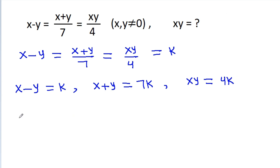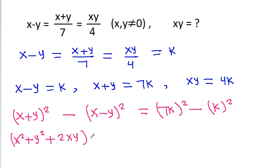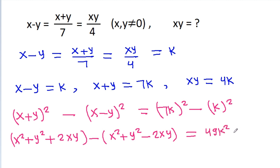Now, (x+y) whole square minus (x-y) whole square will be equal to (7k) squared minus k squared. And it is x squared plus y squared plus 2xy minus x squared plus y squared minus 2xy, that is equal to 49k squared minus k squared. So x squared cancels, y squared cancels, and 2xy plus 2xy gives 4xy, that is equal to 48k squared.